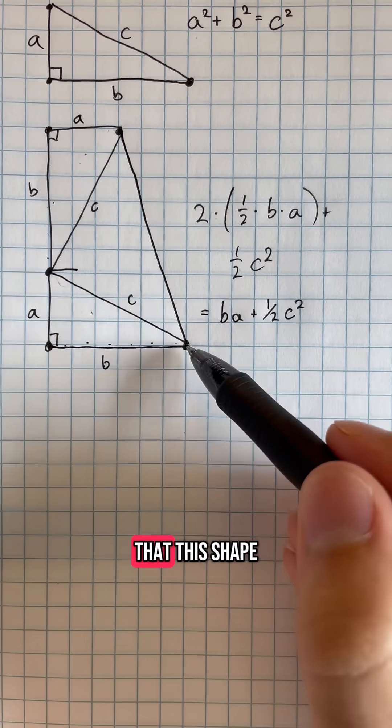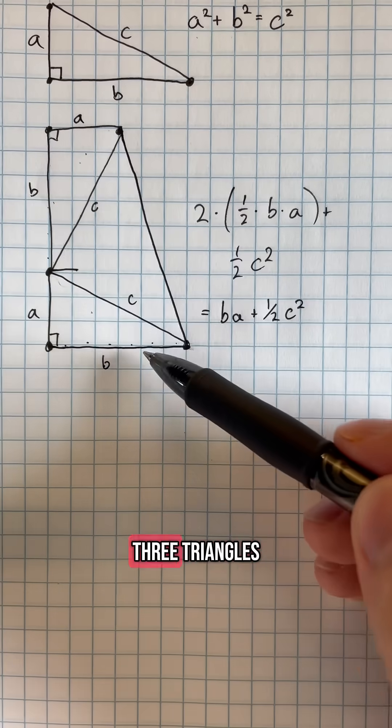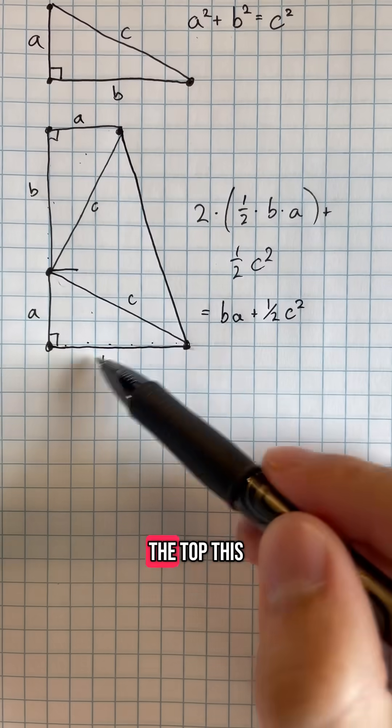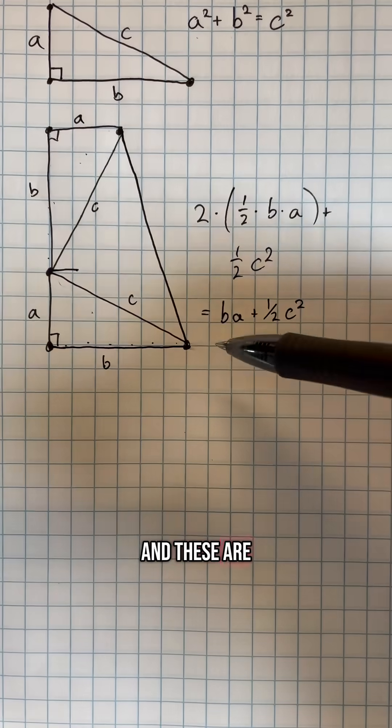But also notice that this shape is not just a collection of three triangles, but it is also a trapezoid, where this is the top, this is the bottom, and these are the two sides.